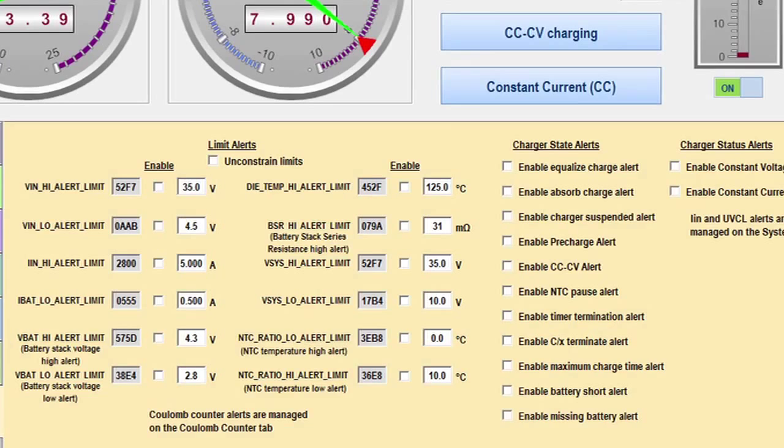As previously described, the limits and alert functionality enables a user to monitor many parameters. Let's set a battery series resistance, or BSR, high alert limit of 120 milliohms.